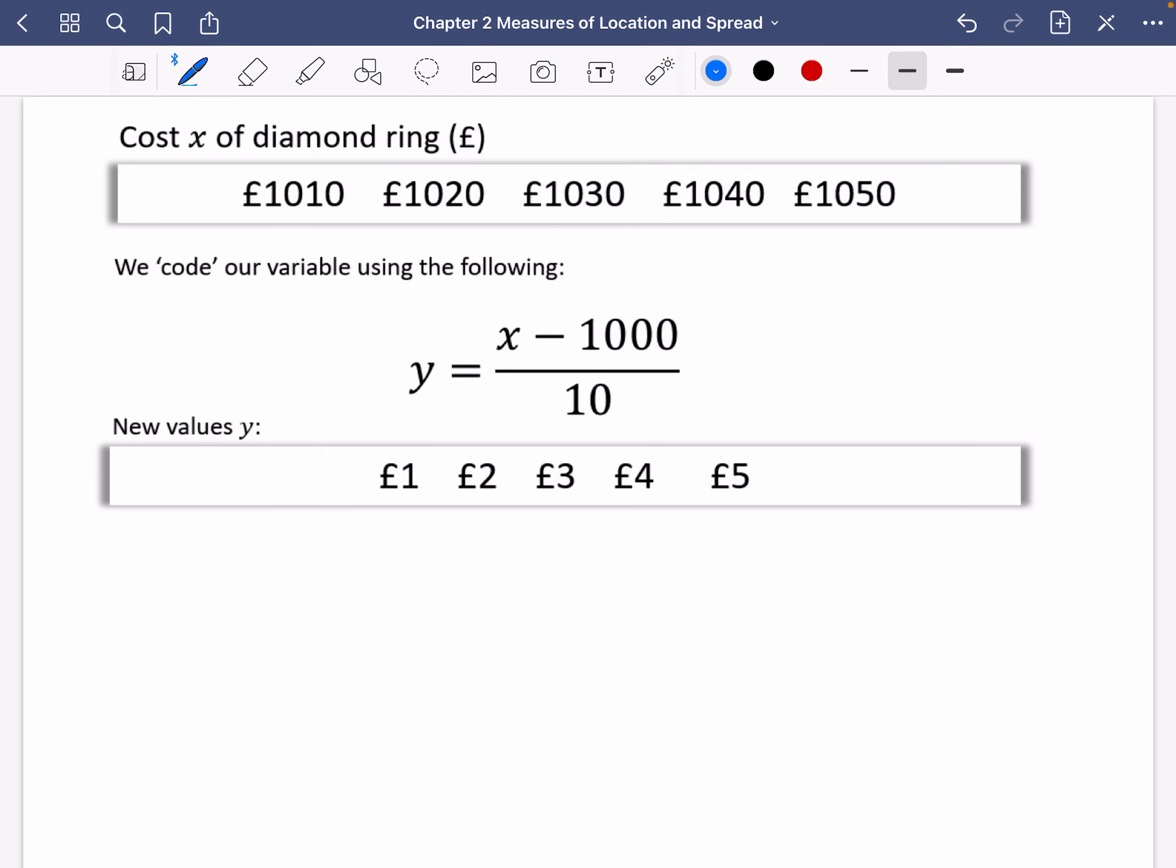So what I'm going to do on my calculator is I'm going to just find out for the y values, I'm going to find out what the mean and the standard deviation are. So for the y values, the mean is going to be 3, and the standard deviation of y is 1.41421356. Of the rings or the ring prices.